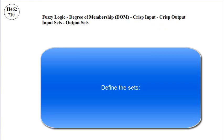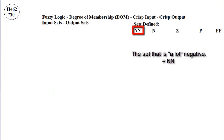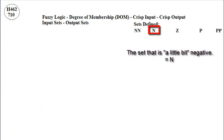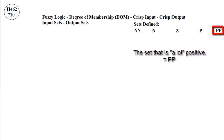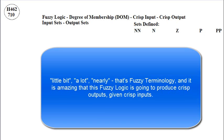Define the sets. The set that is a lot negative is NN. The set that is a little bit negative is N. The set that is nearly zero is Z. The set that is a little bit positive is P, and the set that is a lot positive is PP. Terms like 'little bit,' 'a lot,' and 'nearly' are fuzzy terminology — and it is amazing that this fuzzy logic is going to produce crisp outputs given crisp inputs.